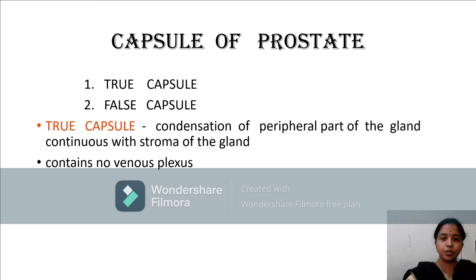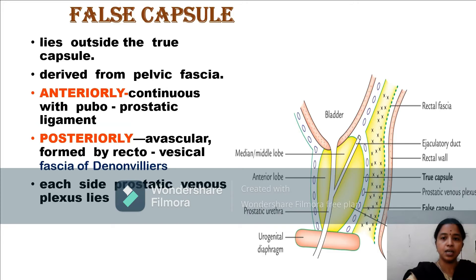The coverings of the prostate, or the capsules, are two in number: the true capsule and the false capsule. The true capsule is the condensation of the peripheral part of the gland and contains no venous plexus. The false capsule lies outside the true capsule and is derived from the pelvic fascia.